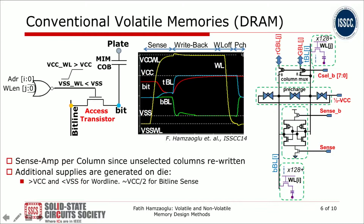You then turn off the wordline, pre-charge, and the next access can start — this is the random cycle time. DRAM design also requires multiple extra voltages: VCC plus VTN for the wordline when writing a one, a negative voltage for the wordline in idle mode to reduce leakage and improve retention, and half VCC for the bitline for sensing. Every single bit on the selected wordline is disturbed in DRAM, so you need a sense amp per column, and column muxing is post-sense amp in DRAM, unlike SRAM.